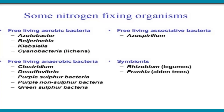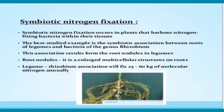Members of the family Leguminaceae are the very best example of symbiotic nitrogen fixation. In this process, Rhizobium contacts a susceptible root hair. This is shown diagrammatically — the formation of root nodules, which we discussed in the last class.